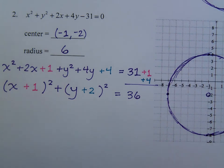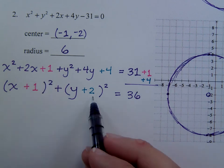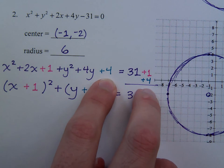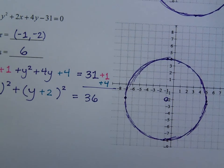So in these problems, the key is completing the square like I've done here. And what you add on one side, you add to the other side, just like I've shown you here. So here is your circle.